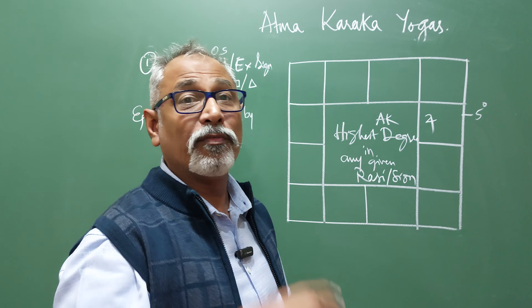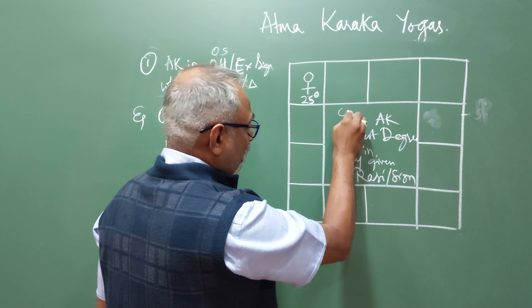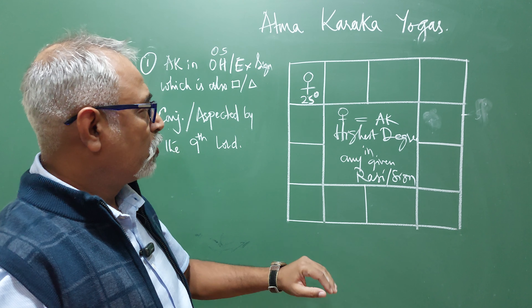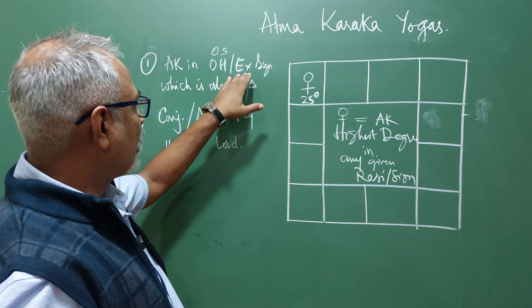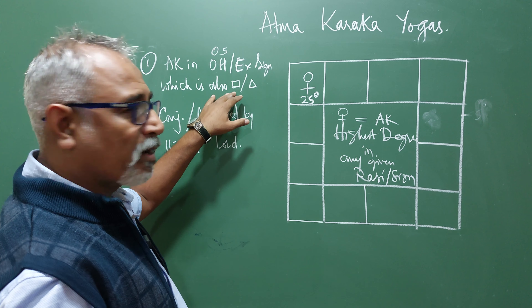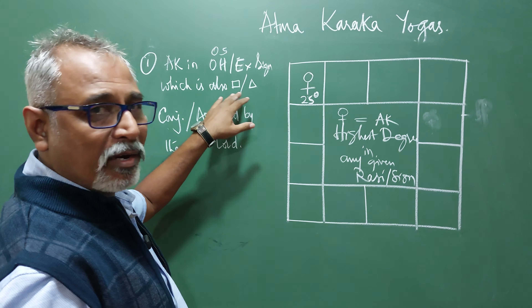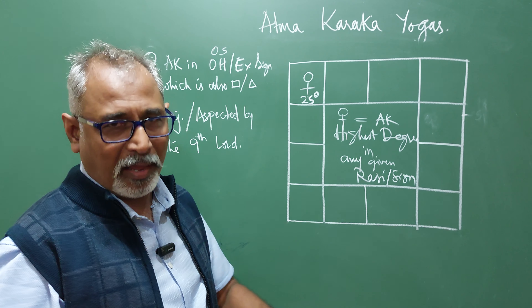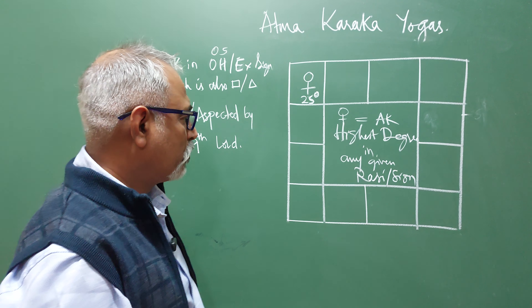It should be in its own house, own sign, or in the exaltation sign. Let us take an example. Jupiter gets exalted but the exaltation strength is very less because it gets exalted at 5 degrees. So let us take some other planet which really gets exalted with a higher degree — that planet will be Venus.